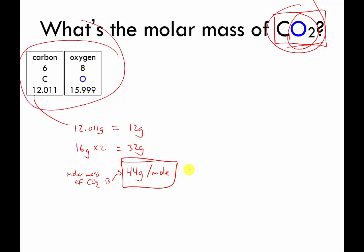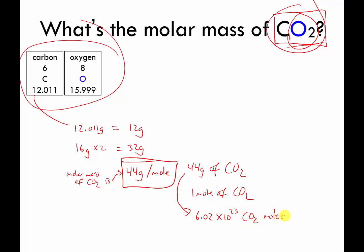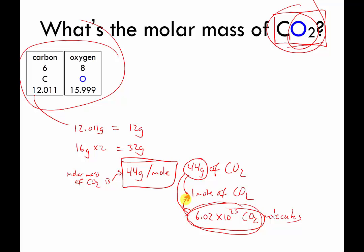So if you had a balloon filled with 44 grams of carbon dioxide, you would have one mole of CO₂. Put another way, if you had 44 grams of carbon dioxide in a balloon, there would be about 6.02 × 10²³ CO₂ molecules bouncing around. All these videos have been different ways of showing you how to convert between how much something weighs and how many molecules you have, stopping along the way to convert to moles, or vice versa. You should be able to go in either direction.